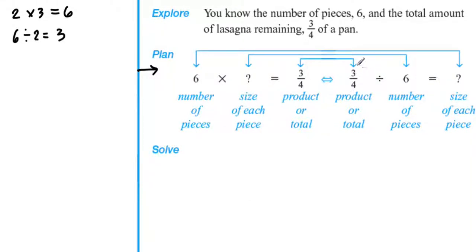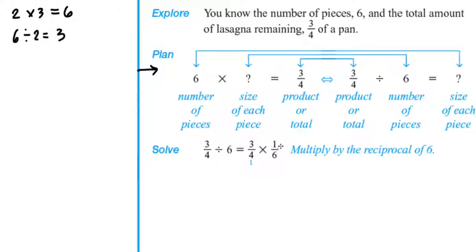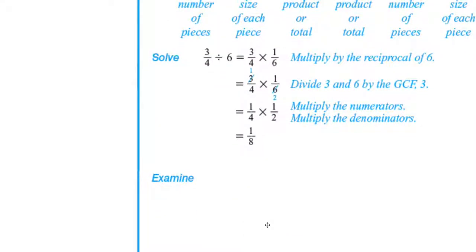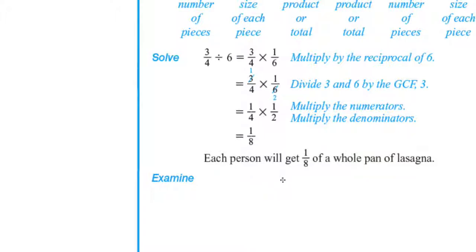We now have a division of a fraction and a whole number. When dividing, we multiply by the reciprocal. We copy three-fourths divided by six and get the reciprocal of six, which is one over six. So we have three-fourths times one over six. The GCF of three and six is three: three divided by three is one, six divided by three is two. We end up with one-fourth times one-half. Multiplying numerators and denominators gives a product of one-eighth. So each person gets one-eighth of the whole pan of lasagna.